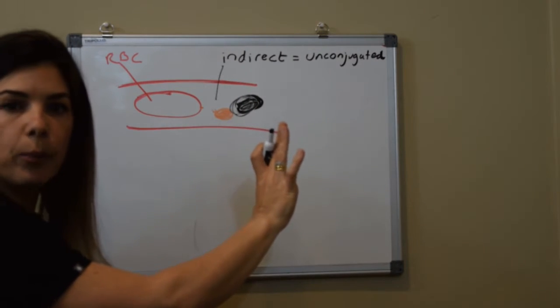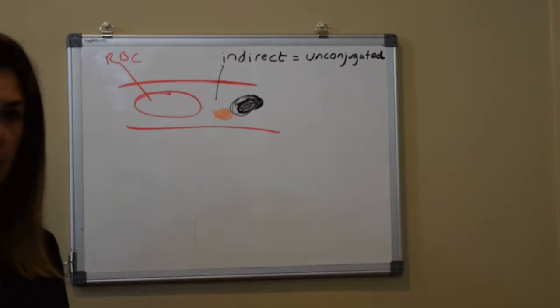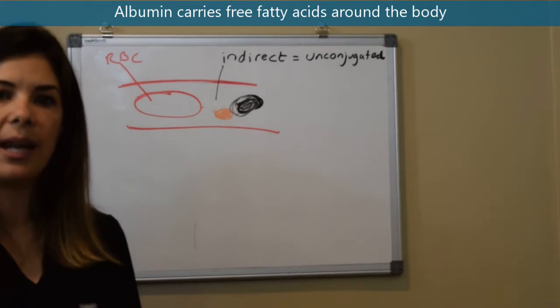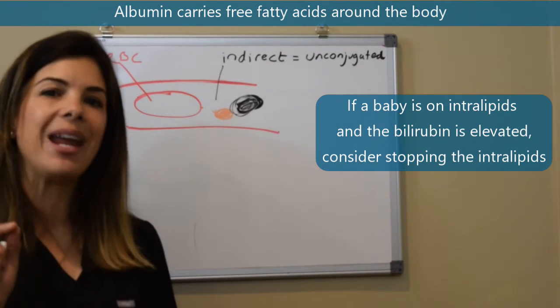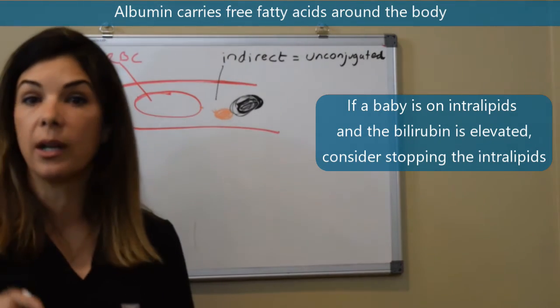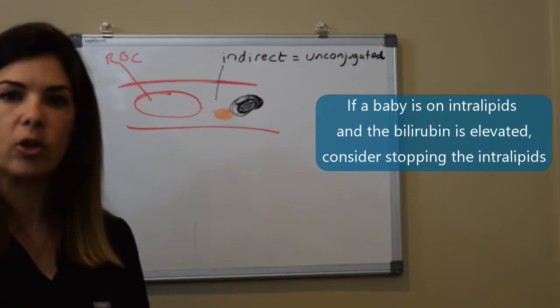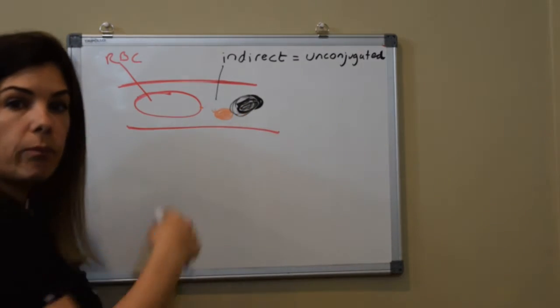Things for you to realize that the albumin also carries around the body are free fatty acids. So if you have a baby on intralipids and they've got a very high bilirubin level then that's something that you might want to consider, actually stopping the intralipids because the intralipids can also bind to the albumin.